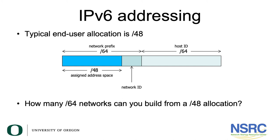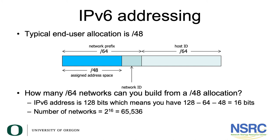If you have 128 bits and a /48 allocation, how many bits are going to remain? You will have 128 minus 64 minus 48, which gives you 16 bits. So the number of /64 networks in a /48 prefix is 2 to the power of 16, which gives you 65,536.